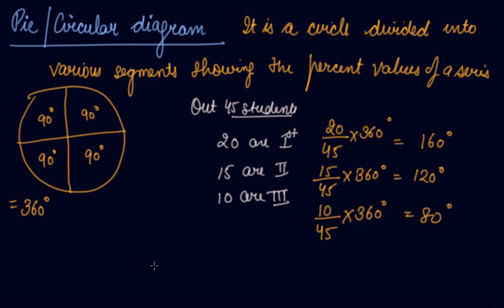In this way, 160 degrees plus 120 degrees plus 80 degrees becomes 360 degrees.